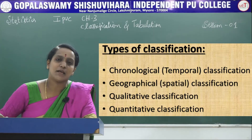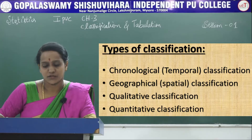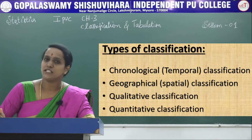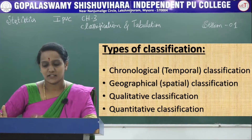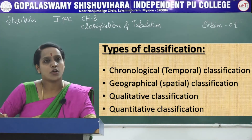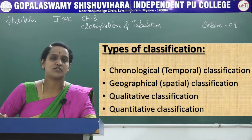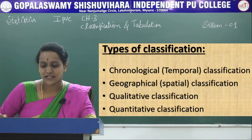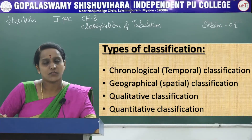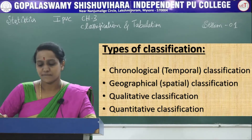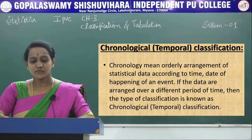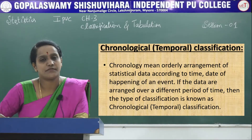Next we will see some types of classification. Generally, classification of data is made on the following bases: chronological classification (that is temporal classification), geographical classification, qualitative classification, and quantitative classification. Let us see one by one what each type of classification means.